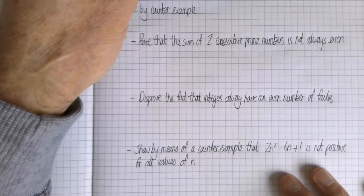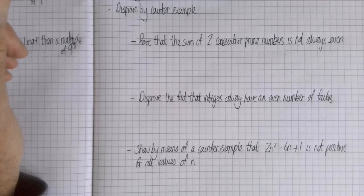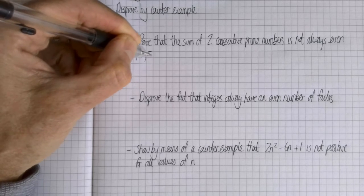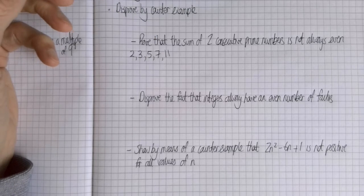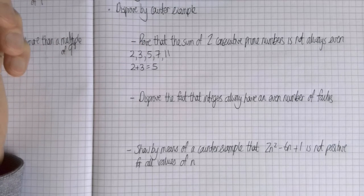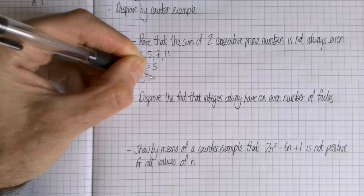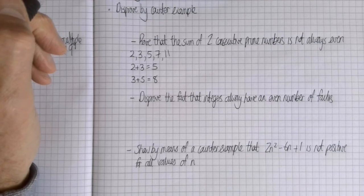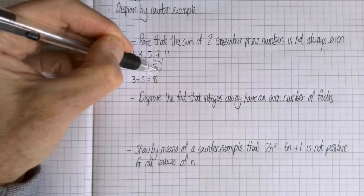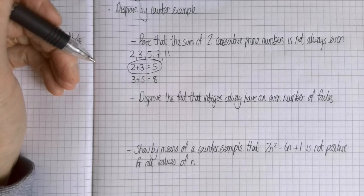Okay, so I've got some examples here for my disprove by counter example work. Prove that the sum of two consecutive prime numbers is not always even. Right, so I'm going to write down my prime numbers: 2, 3, 5, 7, 11. So if I add two consecutive prime numbers, 2 plus 3 is 5. Bingo, I've got there already. Now actually every other sum of consecutive prime numbers will be even because apart from two, all prime numbers are odd.